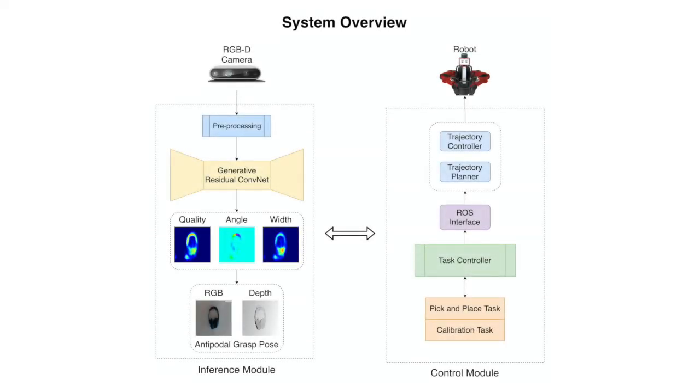On the left is the inference module which predicts suitable grasp poses for the objects in the camera's field of view. On the right is the control module which uses these grasp poses to plan and execute robot trajectories to perform antipodal grasps.